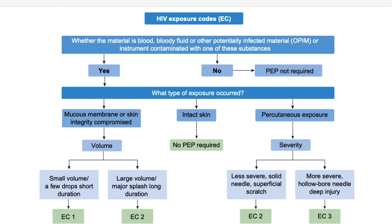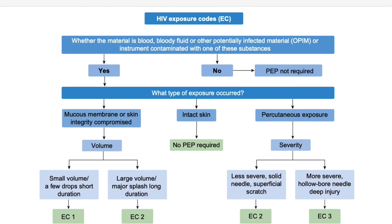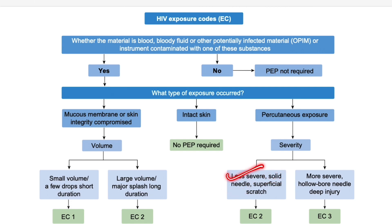If the skin is breached or if the exposure is to mucous membrane, based on the volume you have EC1 or EC2. If the exposure is percutaneous — meaning a needle stick injury — the severity is decided based on the nature of the needle. If it is a solid needle with a superficial scratch, that is Exposure Code 2. If the injury is very severe, such as a hollow bore needle or a very deep wound, then we give Exposure Code 3 (EC3).